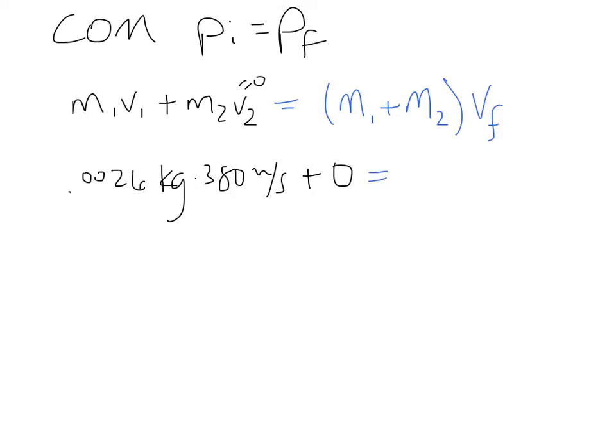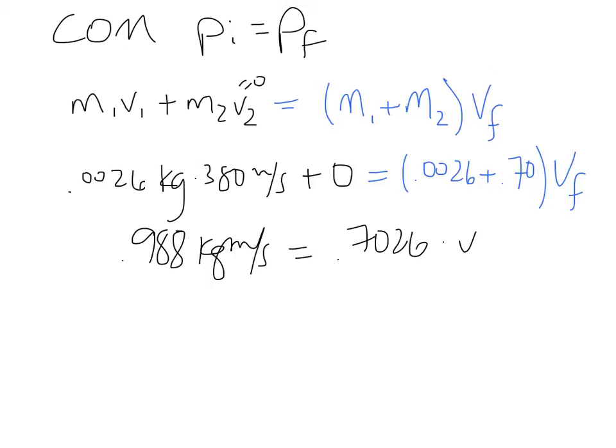That's going to equal the total momentum. So 0.0026 plus 0.70 times V_f. This is the total mass times V_f. So this one is much easier to solve. We have 0.0026 times 380, 0.988 kilograms meters per second equals the new mass, 0.7026 times V_f.